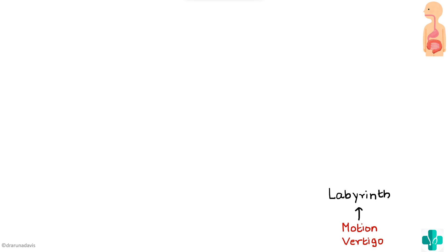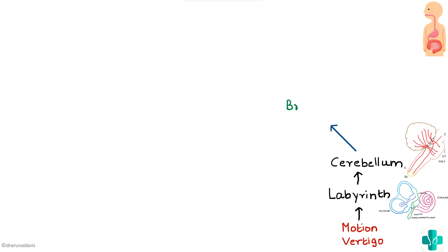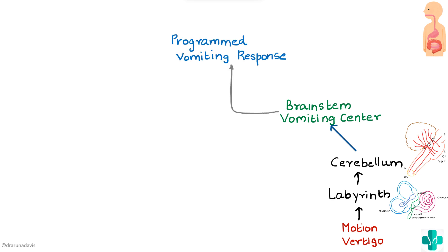In motion sickness, when there is a change in the scenario, the labyrinth — the primary sense organ required for equilibrium — is affected. Impulses travel from the labyrinth to the cerebellum, which in turn conveys that information to the brainstem vomiting center. It is this vomiting center which is mainly responsible for the vomiting response in motion sickness.